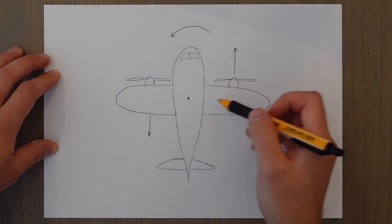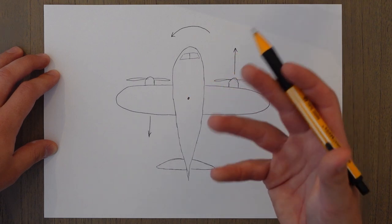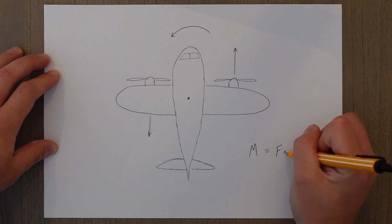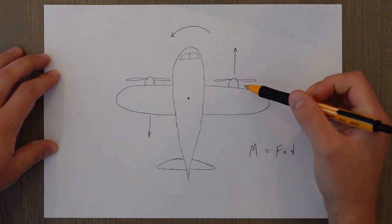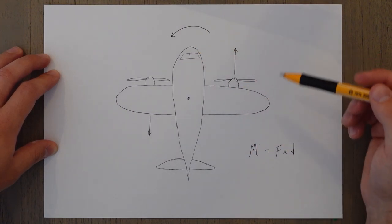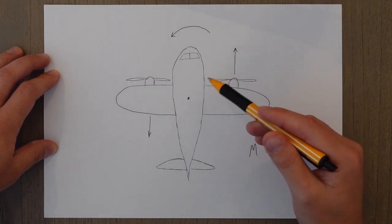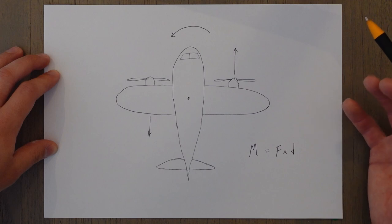The strength of the yawing moment is dependent on the same things as all moments are. So a moment is equal to the force times distance. So if you have a larger force, you're going to yaw more and if you have engines that are further away from the centre of gravity, you're again going to yaw more.